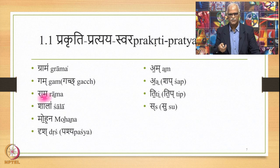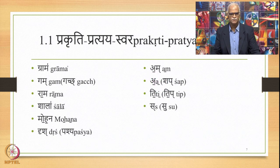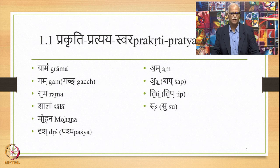Now we come to the Pratyayas. The Pratyaya Am is marked as Anudata because it is a Sup, and all Sups are marked as Anudata. The Pratyaya A is marked as Anudata because it possesses the it-sound Pa — it is stated as Shap in the initial enunciation, making it a Pit sound, and any Pratyaya which is Pit takes an Anudata vowel with no Udatta. The same applies to T because it is Tip, hence Pit and marked as Anudata. Sa, being a consonant, cannot have a vowel accent.